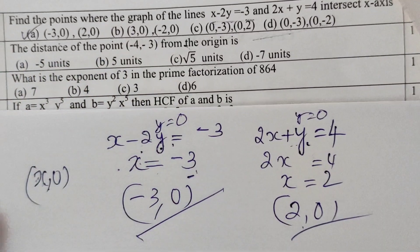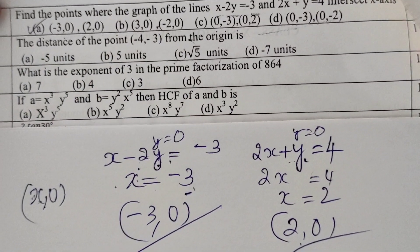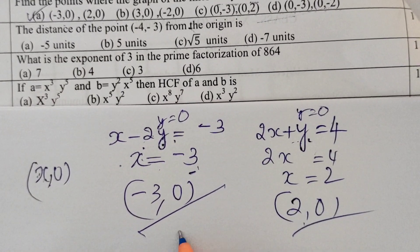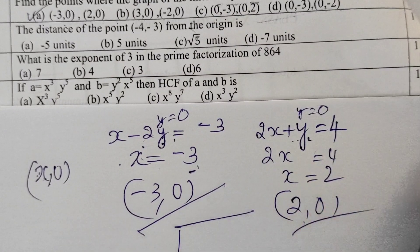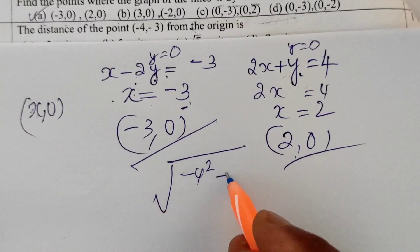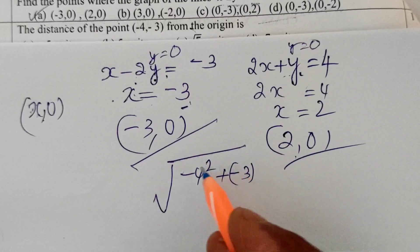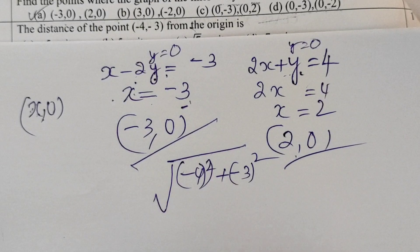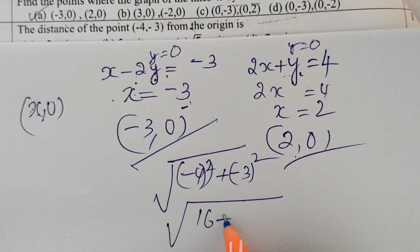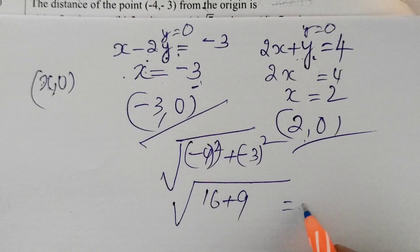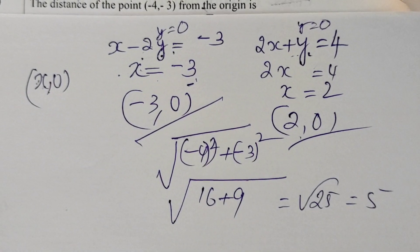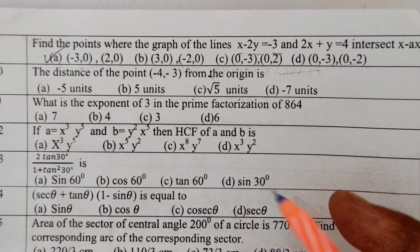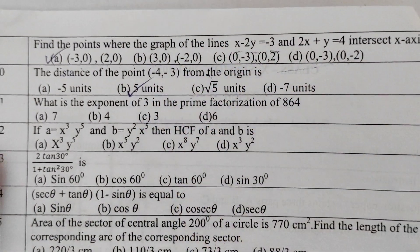The next question is simple: find the distance of the point (−4, −3) from the origin. That is √((−4)² + (−3)²) = √(16 + 9) = √25 = 5. So the distance is 5 units.